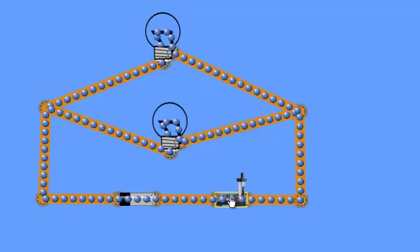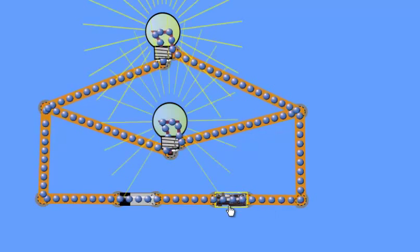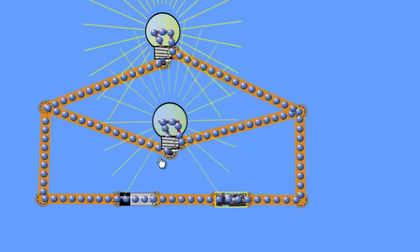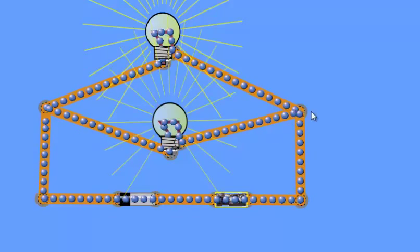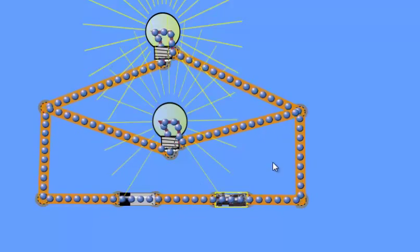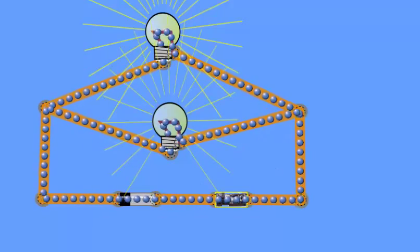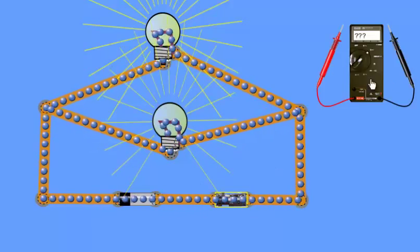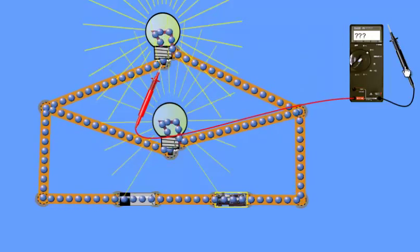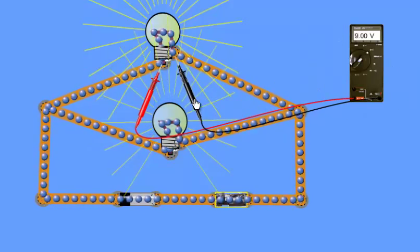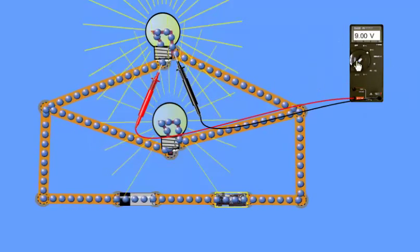Now let me demonstrate the parallel circuit. Here I have connected the two bulbs with the battery and key in a parallel combination. These two bulbs have different resistances. When I press the key, current flows through the circuit.